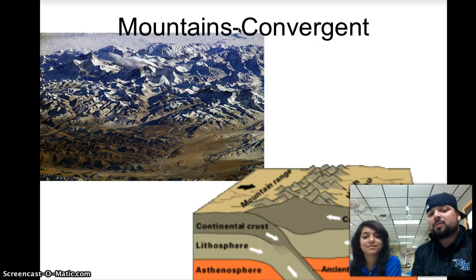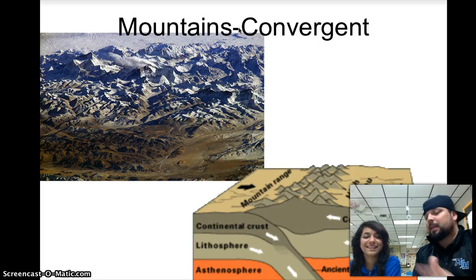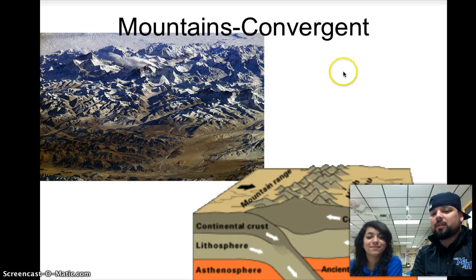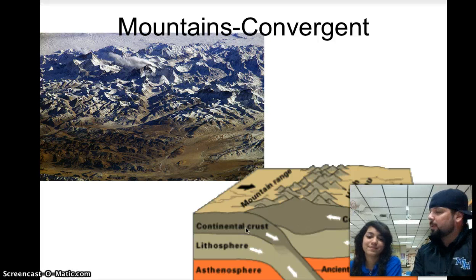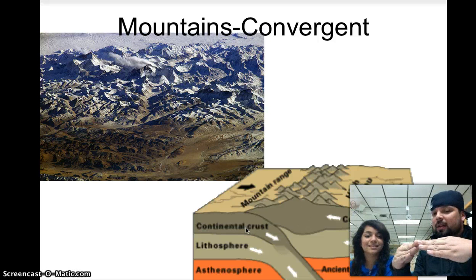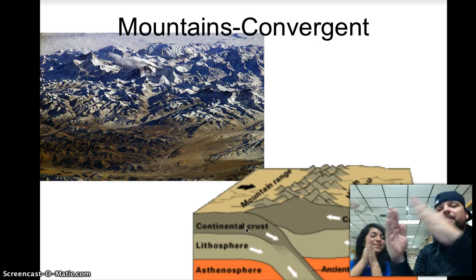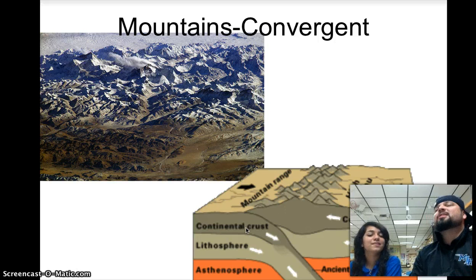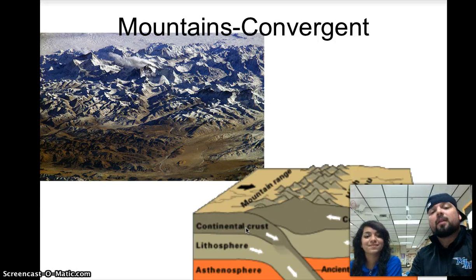Now we've got mountain chains. Mountains are formed from a convergent boundary — convergent means together. What kind of plates are these? It says continental — land plates. They crash together and because they're light they go up, and now you've got a mountain range. Where would you find mountains? In California — and also in Mexico, Africa, mountains everywhere, guys. Convergent boundary.